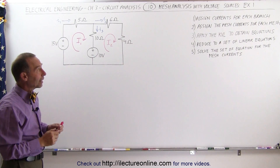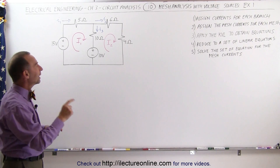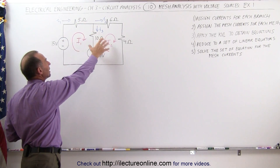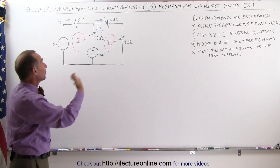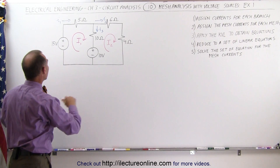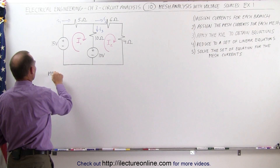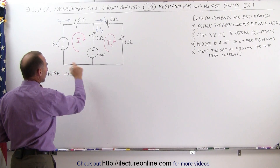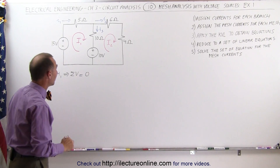The next step is to apply Kirchhoff's voltage law to obtain equations relating the resistors to the mesh currents. Ultimately what we want to do is find the mesh currents, and from that we can find the branch currents. Starting with mesh one, we're going to sum up all the voltages around the loop, and they're going to add up to zero — that's the Kirchhoff voltage law.